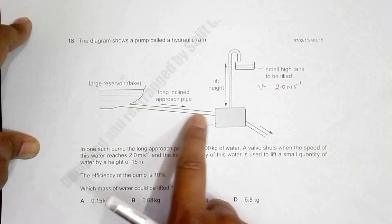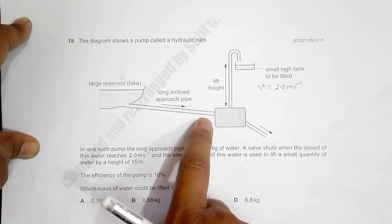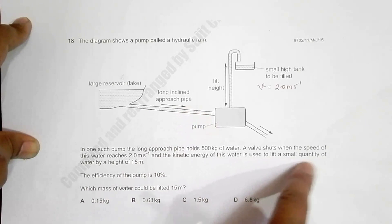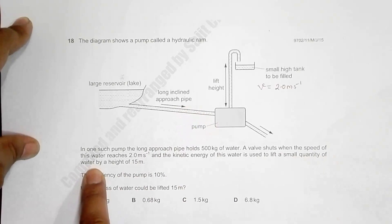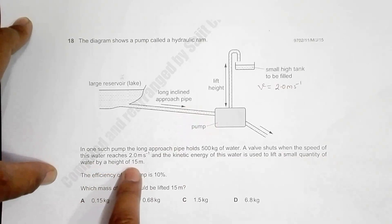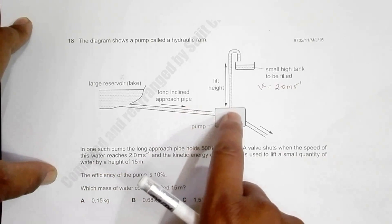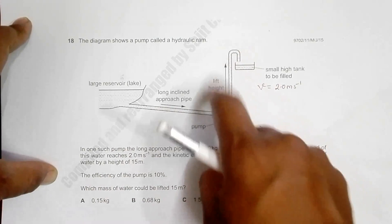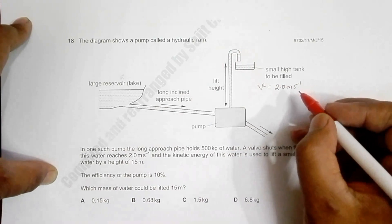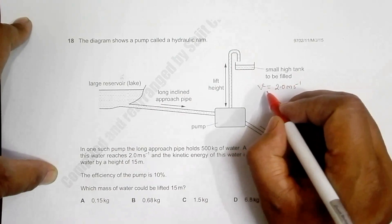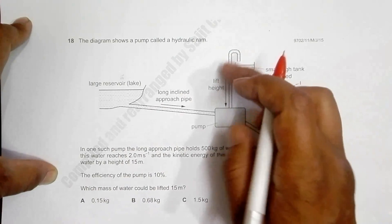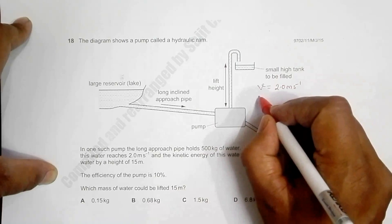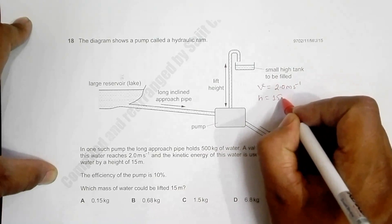And the kinetic energy of this water is used to lift a small quantity of water by a height of 15 meters. So this pump uses the KE of water to lift it to a height of 15 meters. The height of water here is equal to 15 meters.